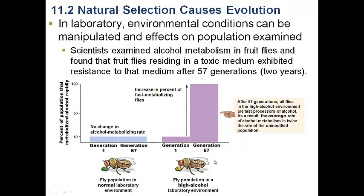Over the next 57 generations — which equals two years of actual time — in this group of fruit flies on the right, we expose them to a food source that has a high percentage of alcohol in it. Over here on the left is our control group; we do not expose them to alcohol. At the end of 57 generations we test the tolerance of the fruit flies for alcohol once again. The control group, as we would expect, hasn't changed at all — still about 10 percent of the flies can metabolize alcohol rapidly.